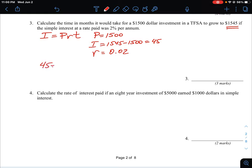So interest is $45, principal is $1,500, the rate is $0.02, and T is what we're asked to find. So we can just work through this on our calculator. $1,500 times $0.02 is going to give us $30.